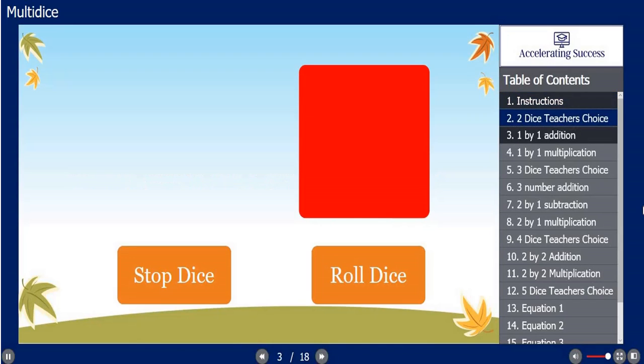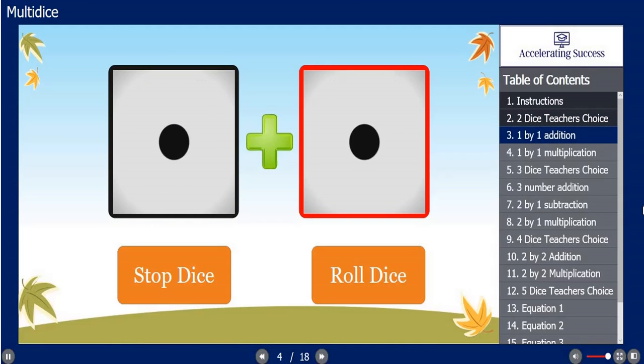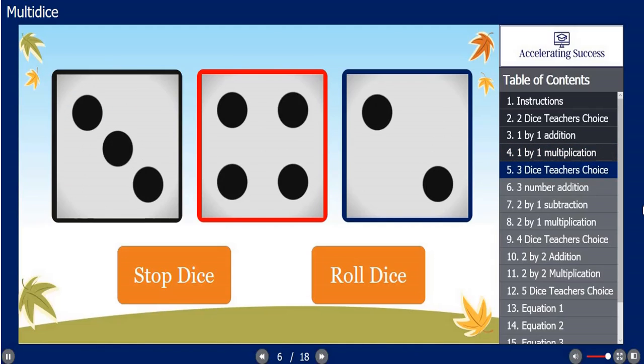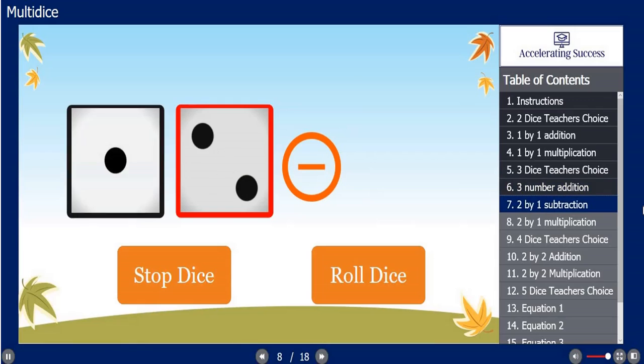It can be something as simple as a simple dice roller. It can be something where teachers use it to do mental math: 1x1 addition, 1x1 multiplication, 3 die teacher's choice. You can do 3 number addition, you can do 2x1 subtraction.